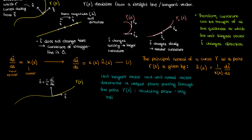The osculating plane only exists if the curvature is non-zero. If the curvature is zero, we cannot have a unit normal vector since the equation for n would be undefined. Theoretically if we had a straight line with zero curvature we could make a vector perpendicular to the tangent and call that the normal, but we wouldn't know where the normal is pointing since we wouldn't know where the curve is curving. So the normal vector is undefined for a straight line.